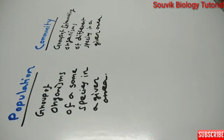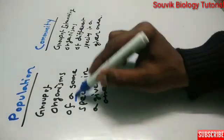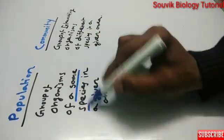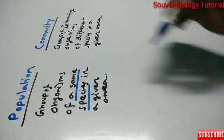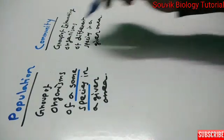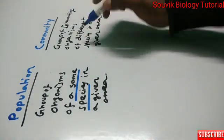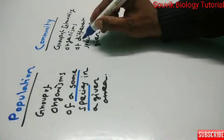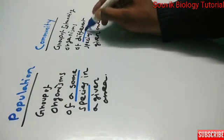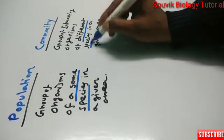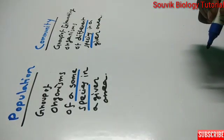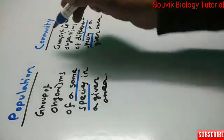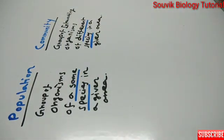The key difference here is: population is a group of organisms of the same species, whereas community is a group of interacting organisms of different species. That is the point in which population differs from community.